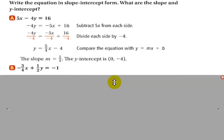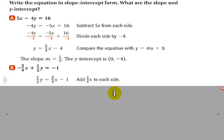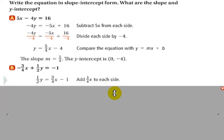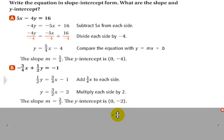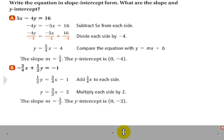The second one, you've got negative 3 fourths x plus 1 half y equals negative 1. So, again, we need to add 3 fourths x to each side. And then, multiply each side by 2. Every term by 2. And you end up with a slope of 3 halves and a y-intercept of negative 2.